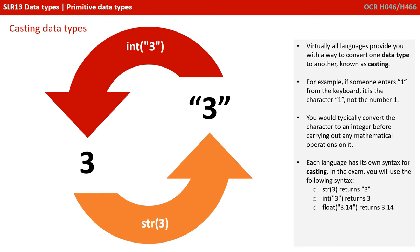Virtually all languages provide you with a way to convert one data type to another, known as casting. For example, if someone enters one from the keyboard, this is the character one and not the numerical value one. You would typically convert the character to an integer before carrying out mathematical operations on it. Each language has its own syntax for casting.